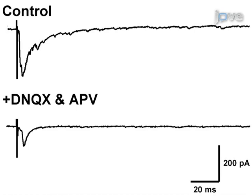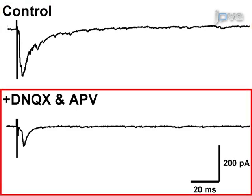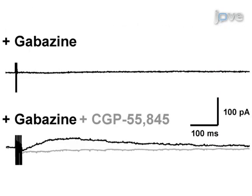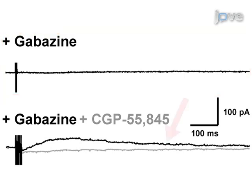The compound synaptic response of a fast-spiking interneuron in response to a single extracellular stimulus is shown here. Application of the ionotropic glutamate receptor antagonists DNQX and APV isolates the monosynaptic inhibitory post-synaptic current, or iPSC. Application of the GABA-A receptor antagonist GABA-Zine abolished the fast component of the iPSC. A train of five stimuli revealed a slow GABA-B receptor-mediated iPSC, which was blocked by subsequent application of CGP.